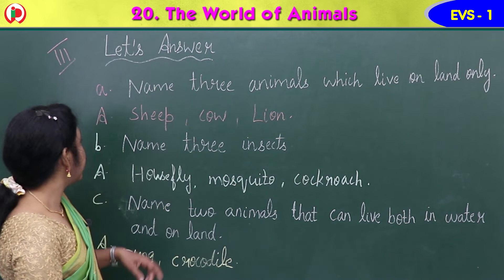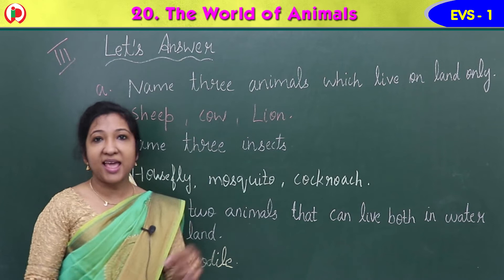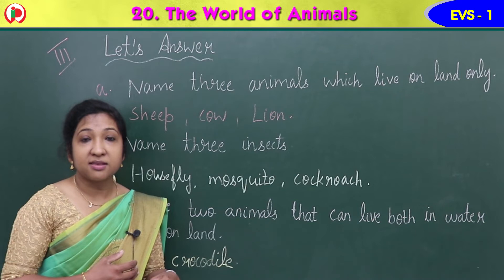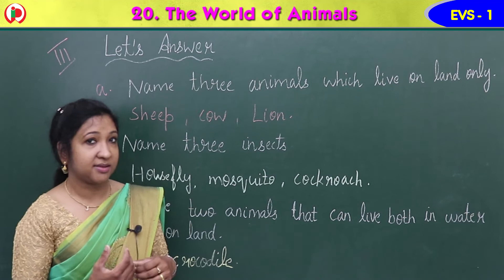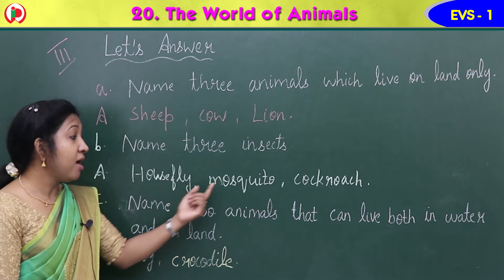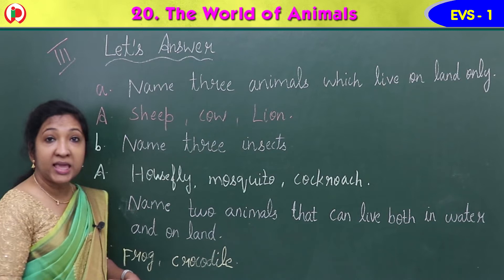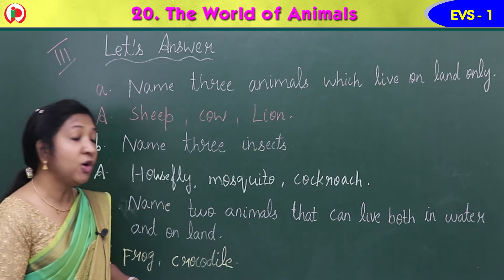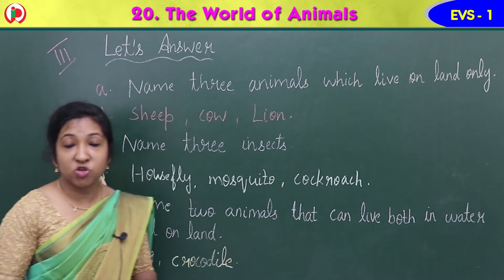The second question, Question B: name three insects. You learned about insects. Answer: housefly, H-O-U-S-E-F-L-Y; mosquito, M-O-S-Q-U-I-T-O; cockroach, C-O-C-K-R-O-A-C-H. These are the three insects.